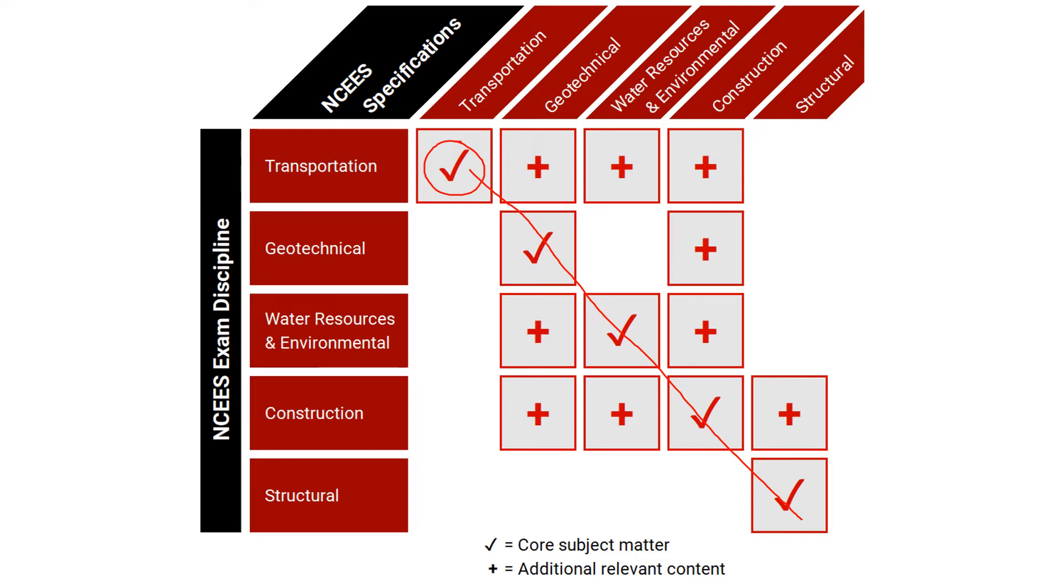The way to read this diagram is to read it across the rows. For instance, if I was taking the transportation exam, I would start in this row for transportation. Of course, I'm going to see transportation problems, but the additional relevant content matter is going to come from geotechnical, water resources, environmental, and construction.